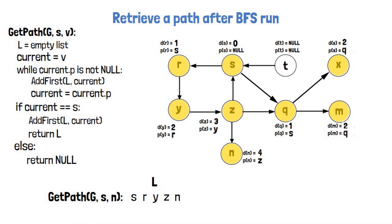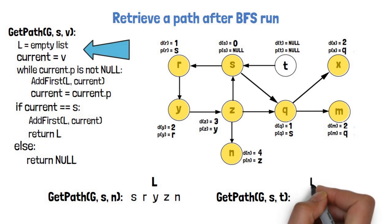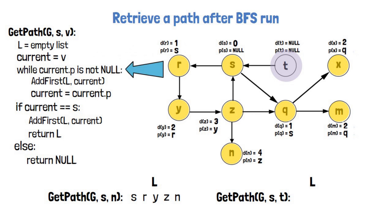Let's see what happens when we get an input where there is no path. Say we want to find the path between S and T. We start again with creating a list and setting current to T. The parent of T is null, so we don't enter the while at all. We ended up with T, which is not S, so we return null.